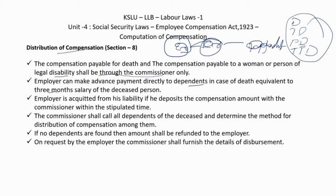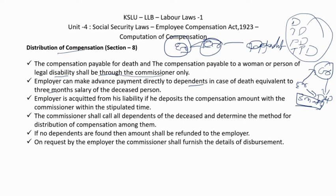The employer can make advance payments directly to dependents in case of death, but this advance payment should not exceed three months' salary. The remaining amount must be transferred to the commissioner. The employer is acquitted from liability once the compensation amount is deposited with the commissioner within the stipulated time; thereafter it becomes the commissioner's responsibility to distribute the compensation to dependents.